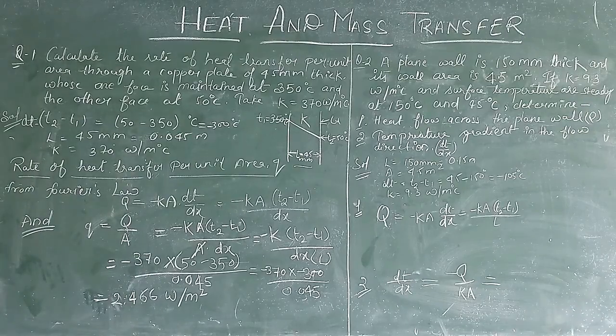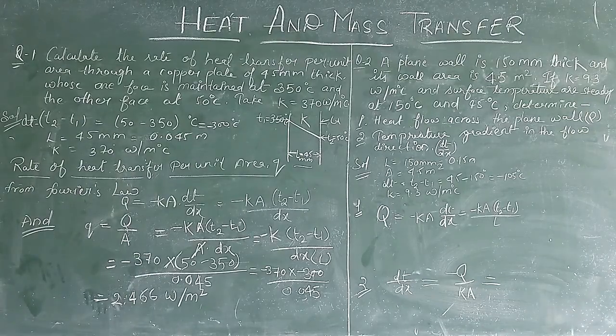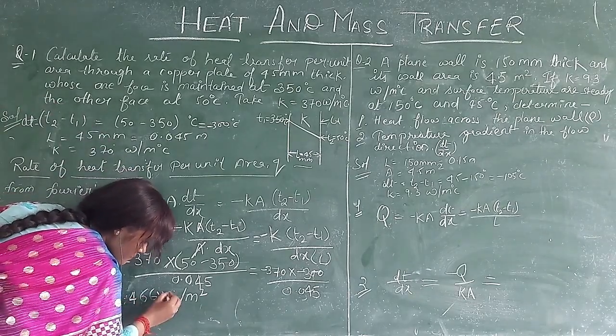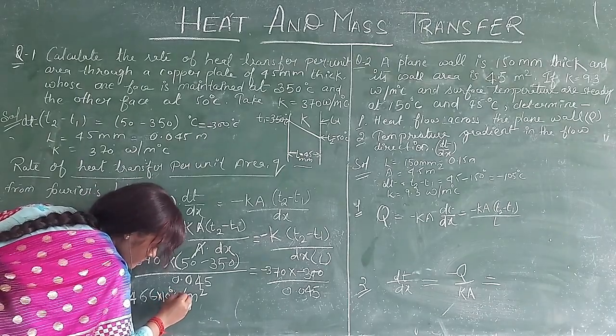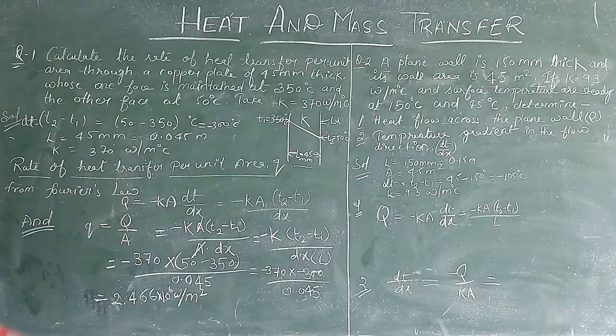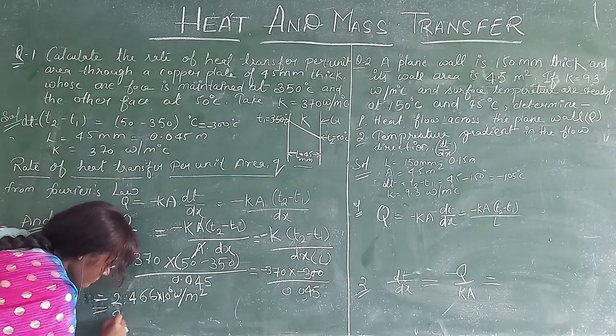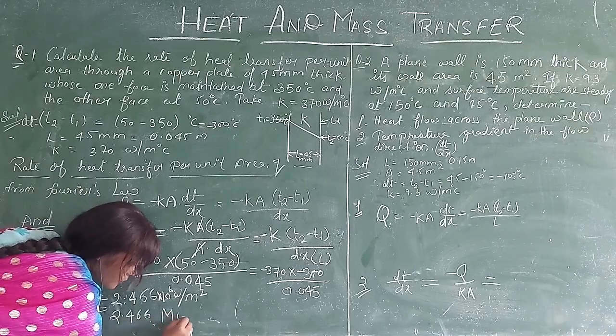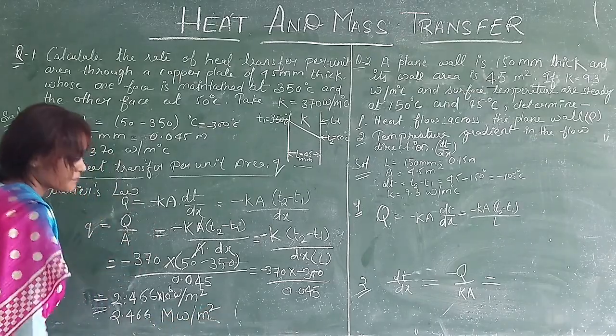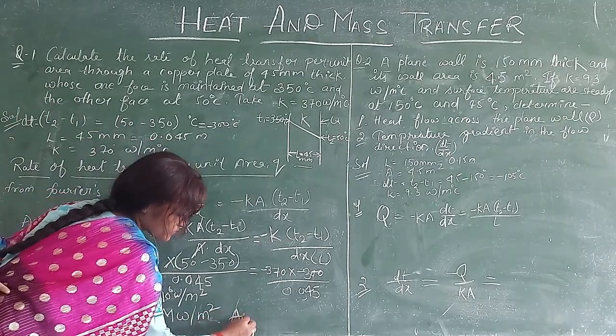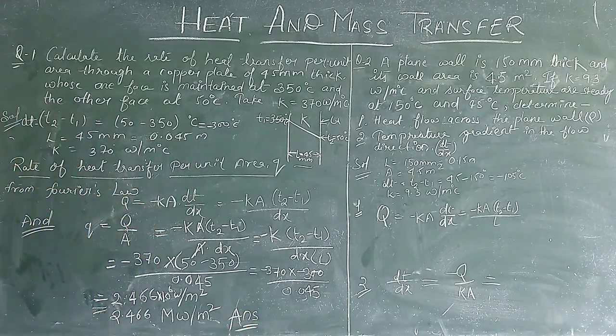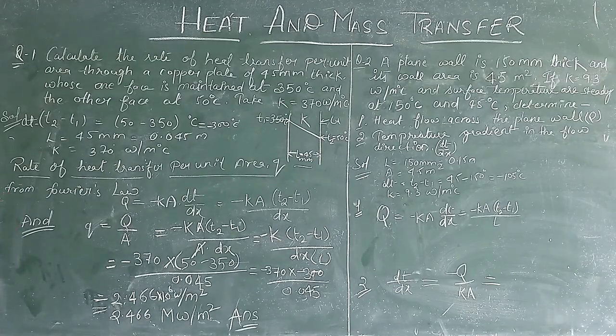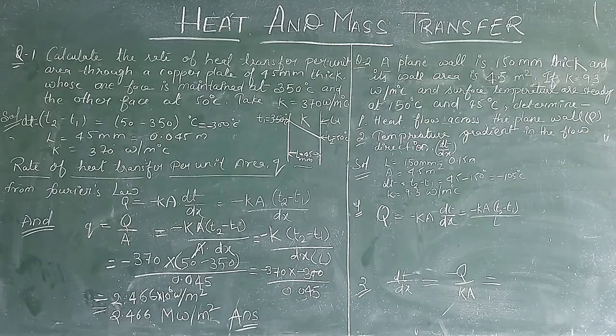2.466 megawatt per meter square. Now you can see this. If you convert to megawatt, it will be 2.466 MW per meter square. So this is the solution. This is the rate of heat transfer per unit area.